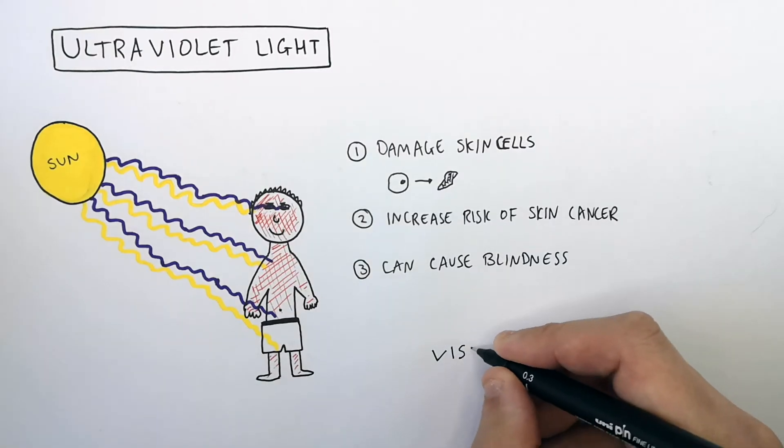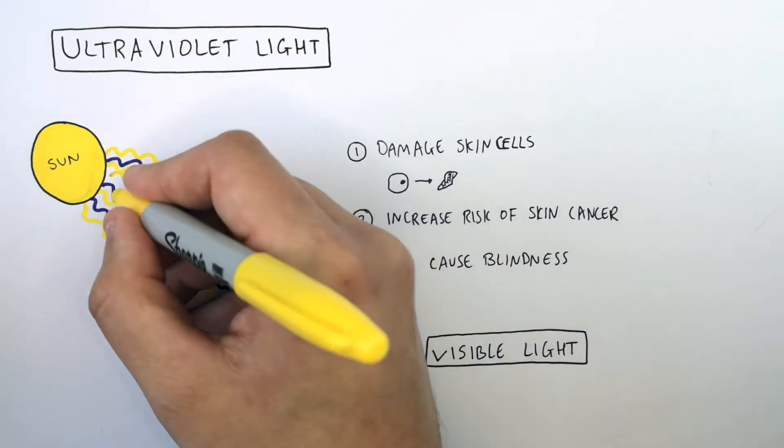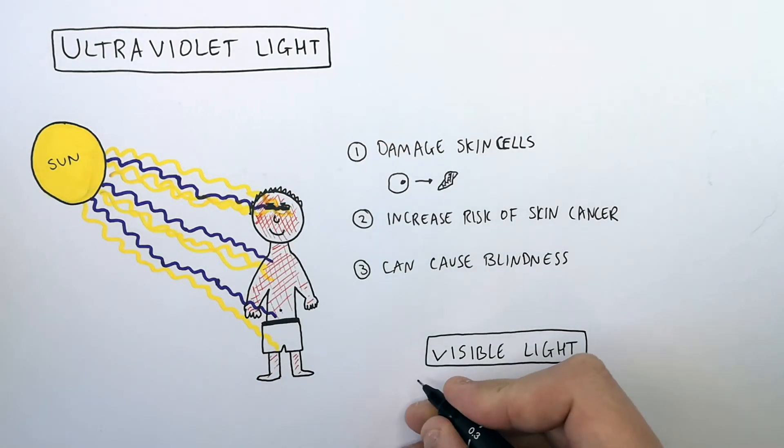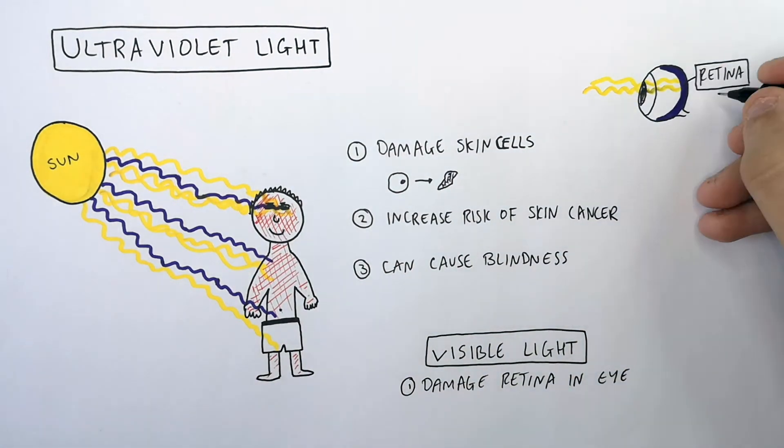So whereas UV radiation can cause blindness, visible light emitted from the sun can also cause damage to your eyes. However, visible light doesn't cause blindness. It will damage the retina in the eye, which will affect your ability to see.